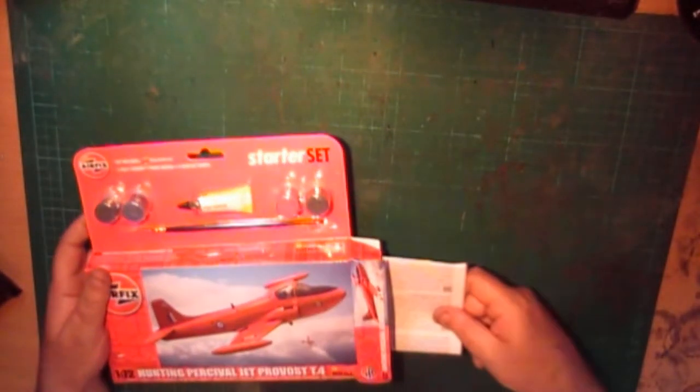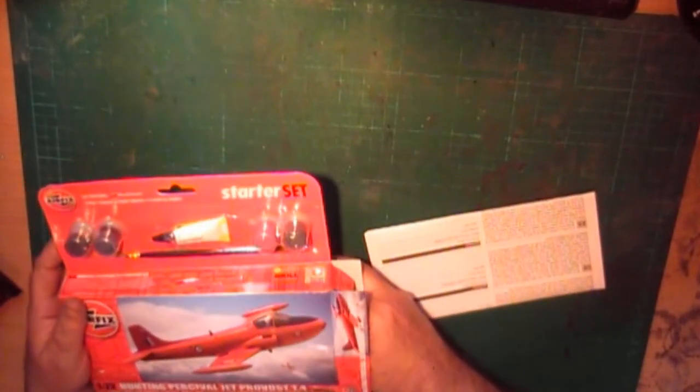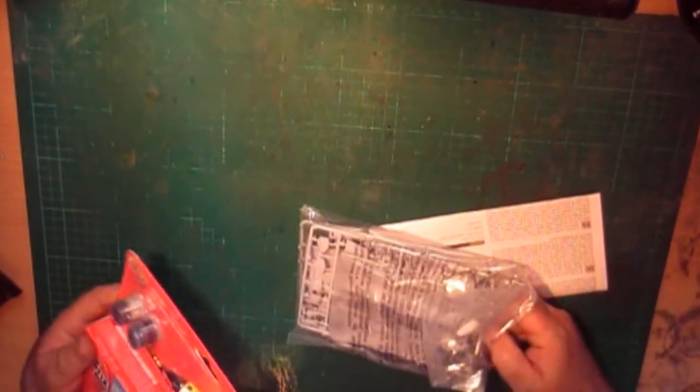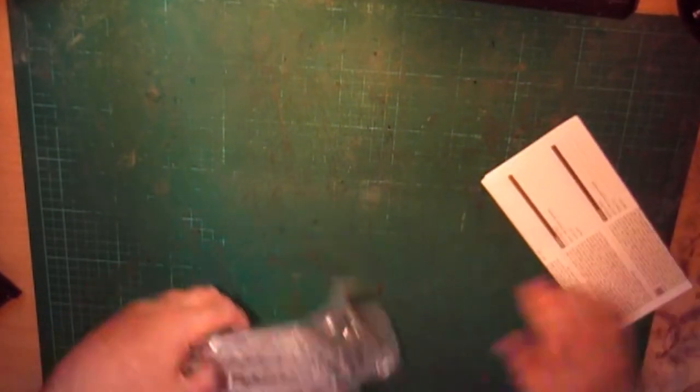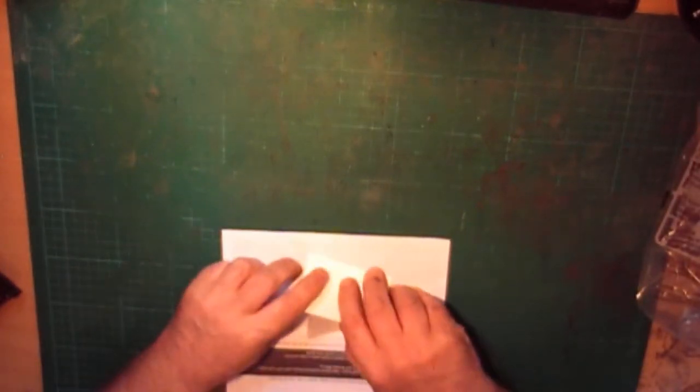Right, in the box we have instructions, bag of parts, and that's it. Let's have a look at the instructions first, and we've got some decals here as well. I'll have a look at those in a minute.